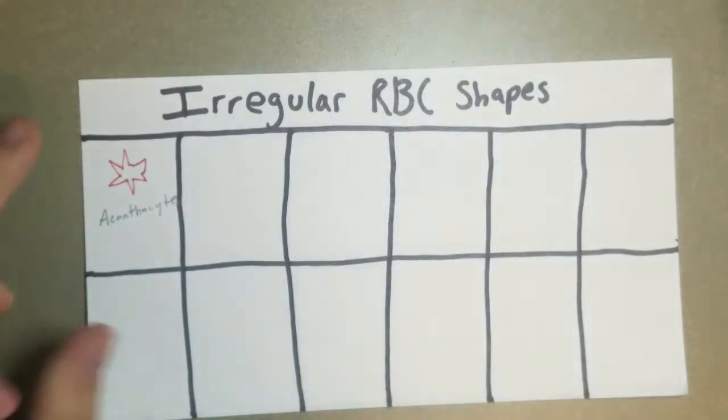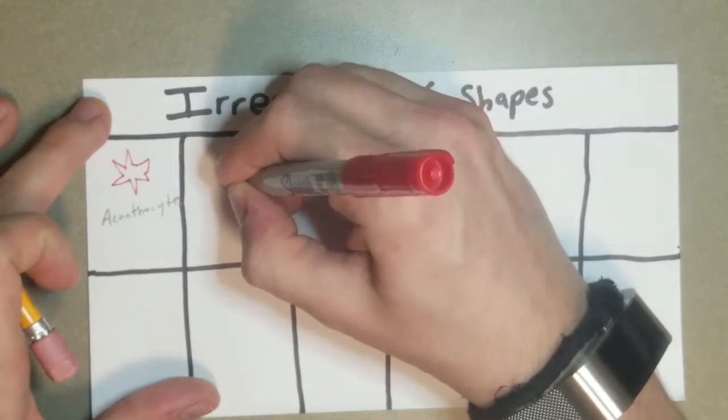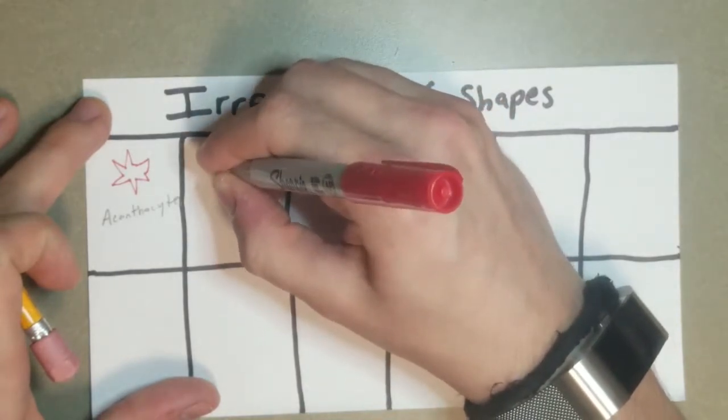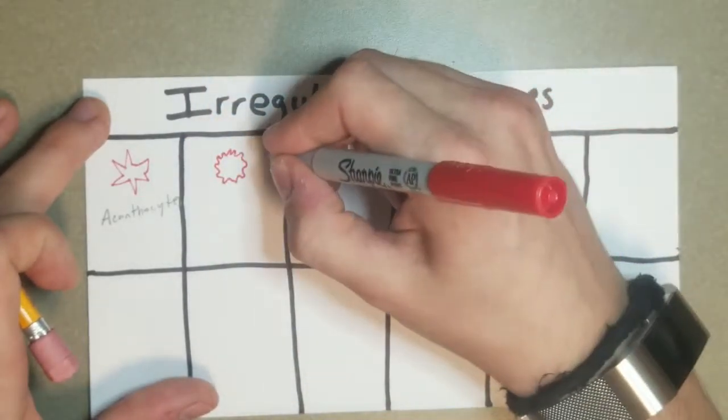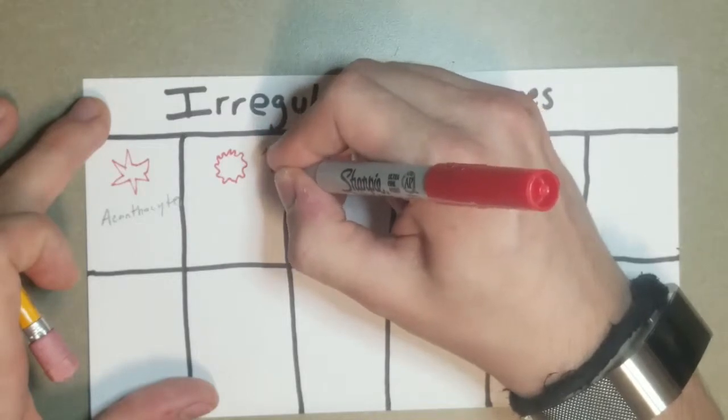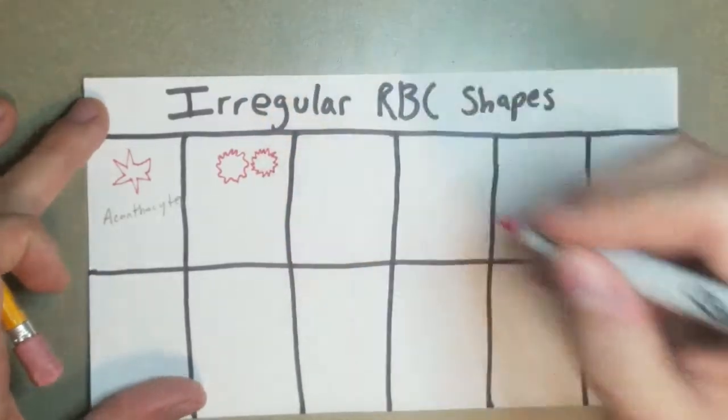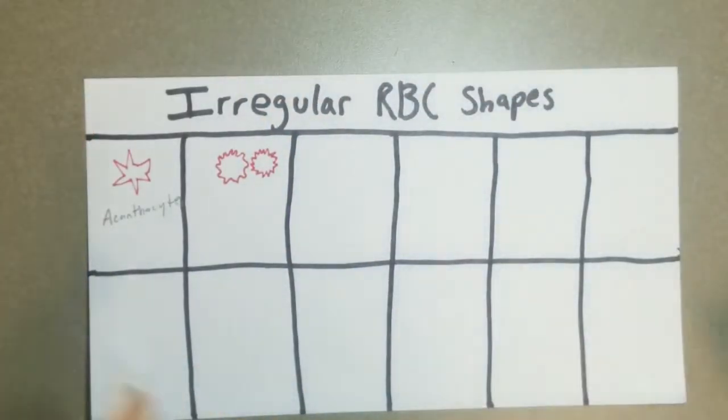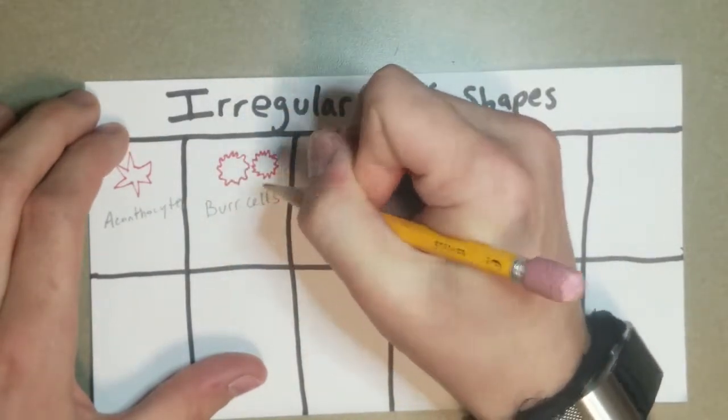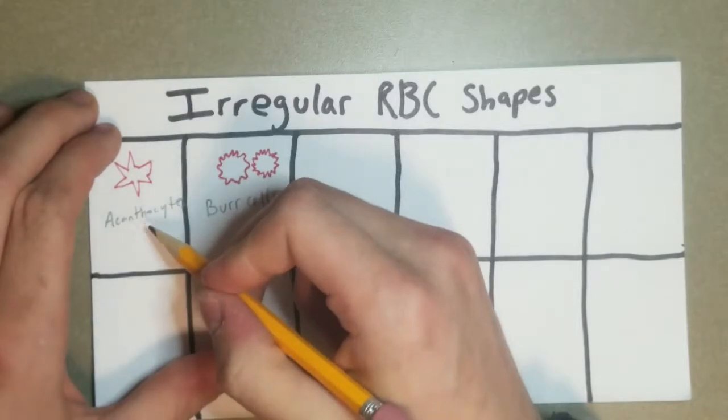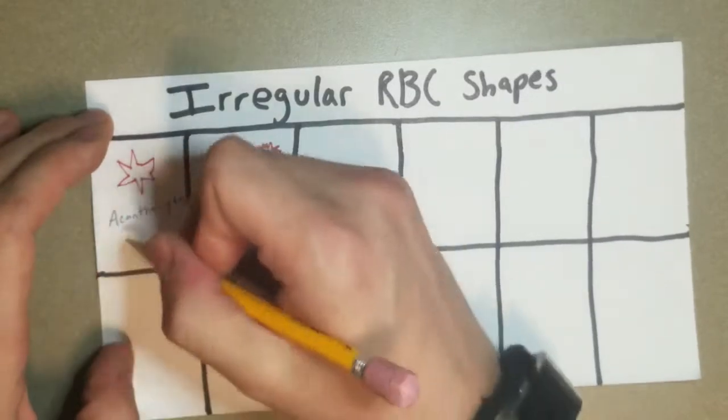Next up we have echinocytes, otherwise known as burr cells. And these ones are more perfectly arranged, more symmetrical. You can see them more rounded off sometimes too, or other times they're going to be just kind of perfect spikes going off all around the same length. Don't mix that up with these though, these are sometimes referred to as spur cells. I just don't really like to talk about either one of them.